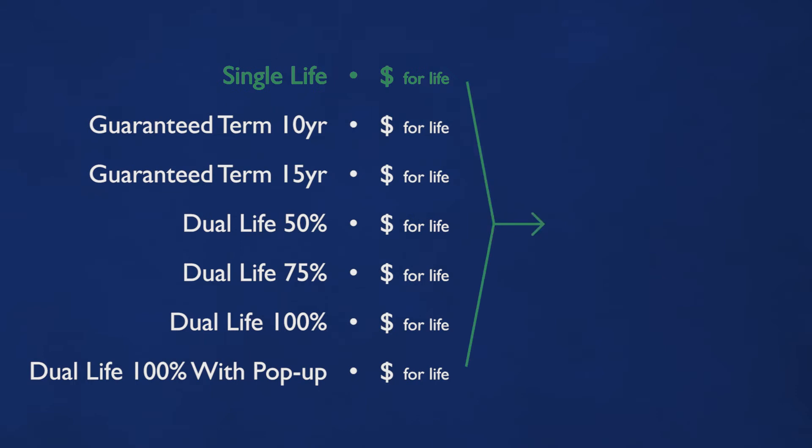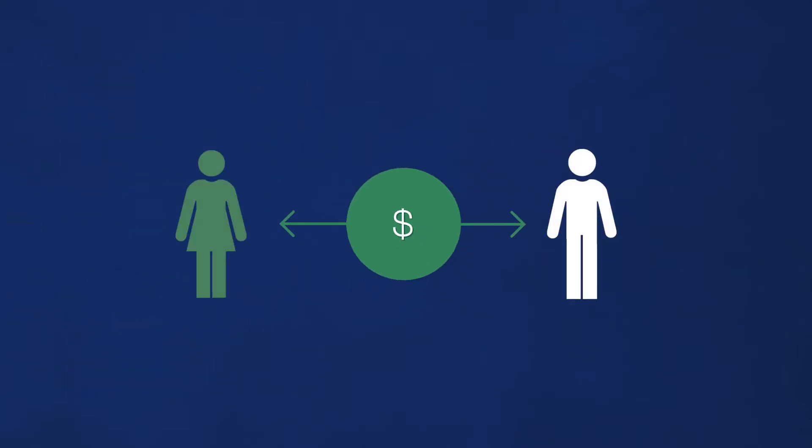All options have the same value. The differences in payment amounts reflect how much you leave to a beneficiary. The Single Life option pays you the highest monthly amount.